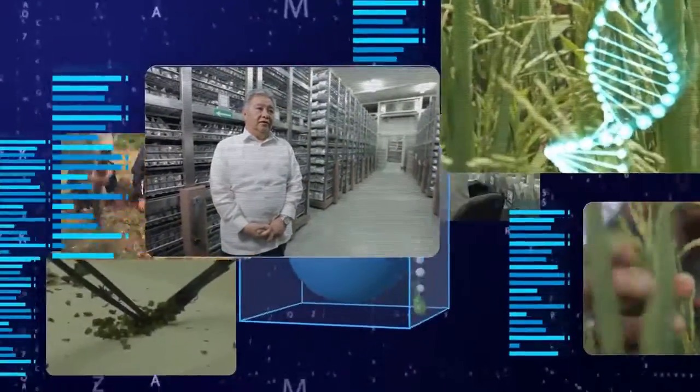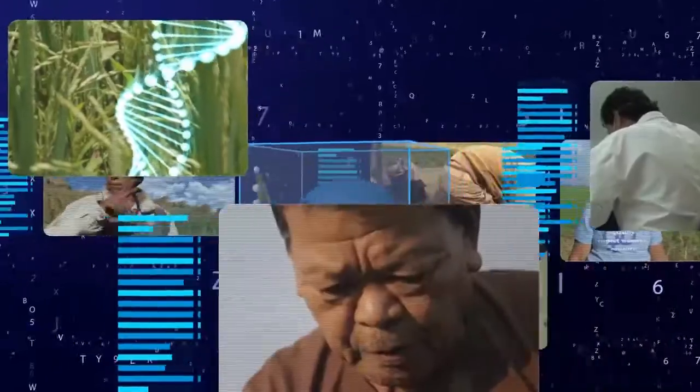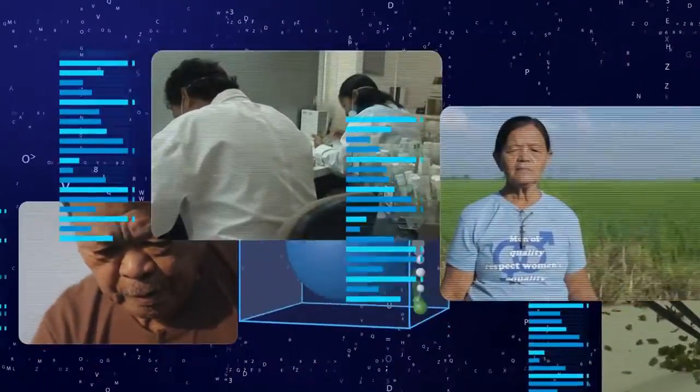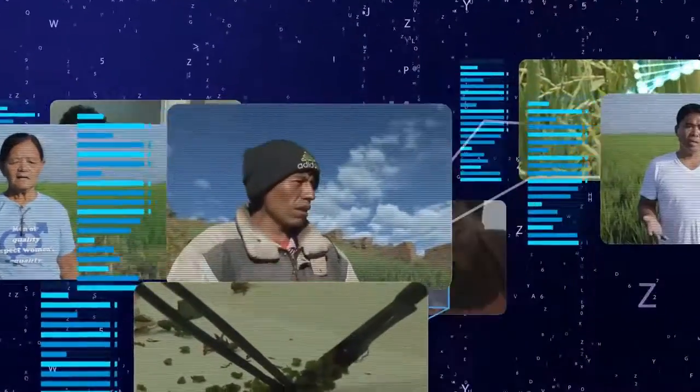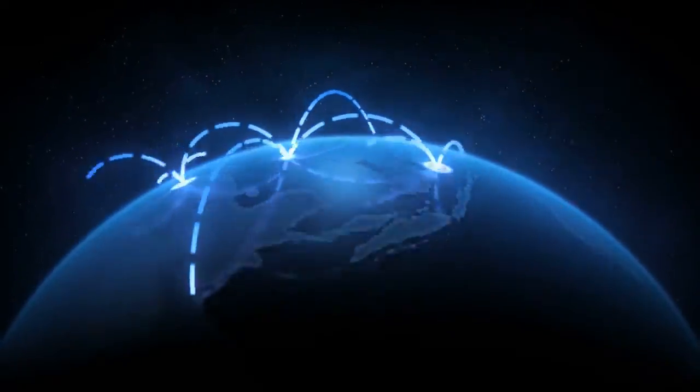The global information system, with its mapping and visualization tools, will be a globally networked search engine, personalized for the plant genetics community, where farmers' and consumers' needs are met.